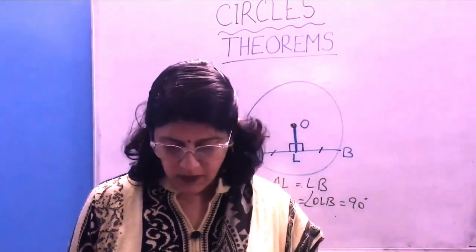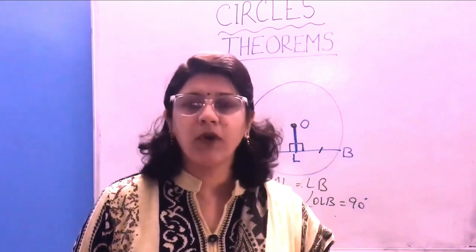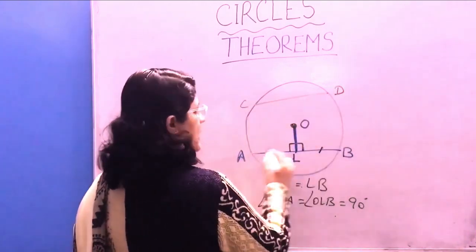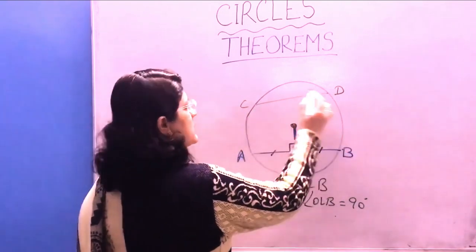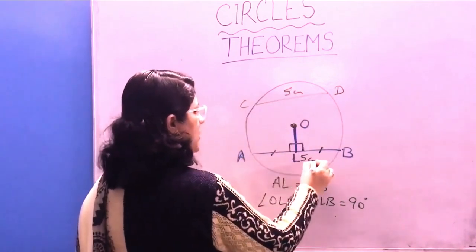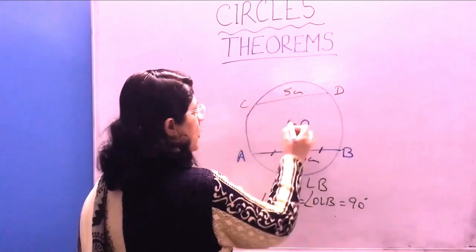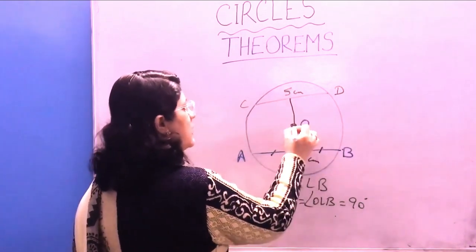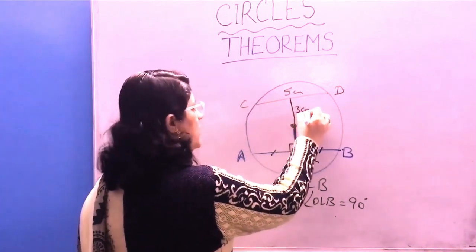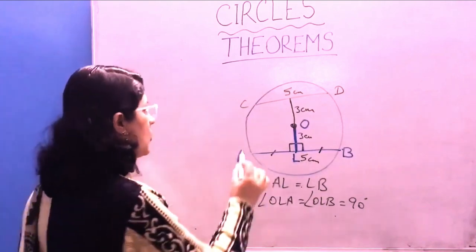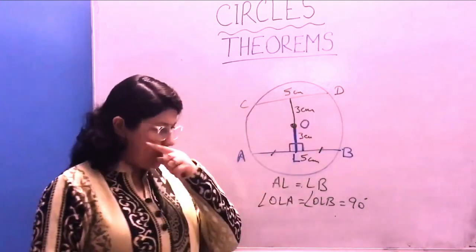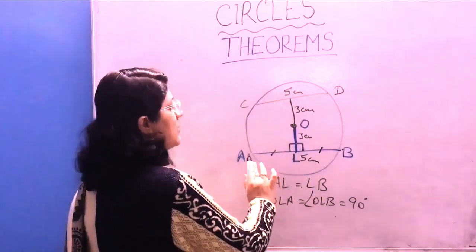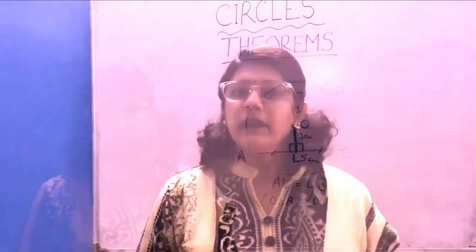The second theorem is: equal chords of a circle are equidistant from the center. If chord AB has length 5 cm and chord CD also has length 5 cm, these are equal chords. So the distance of chord CD from the center is the same as the distance of chord AB. If one distance is 3 cm, the other is also 3 cm. Vice versa, if the chords are equidistant from the center, then the chords are equal in length.